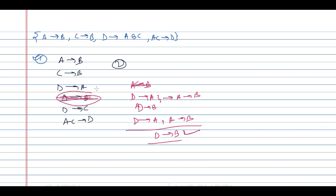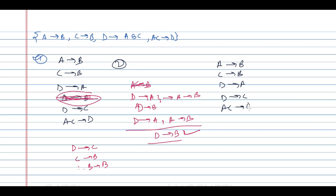Is there anything else to remove? We can also note D→C, C→B, so D→B is derivable that way too. After step 2, the functional dependencies are: A→B, C→B, D→A, D→C, and AC→D. Now applying step 3: find A-closure — gives A, B, but not C. Find C-closure — gives C, B, but not A. So you cannot reduce the LHS of AC→D further.